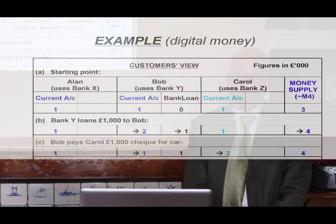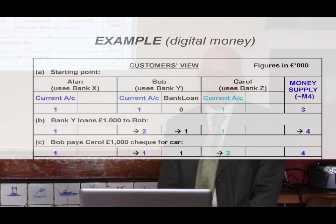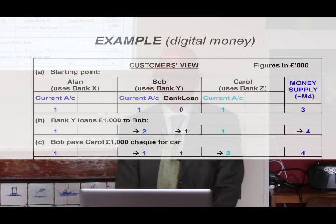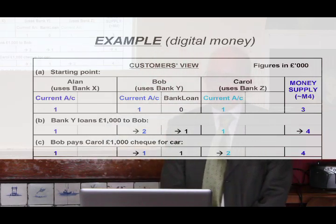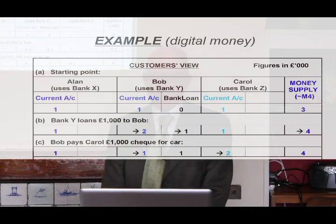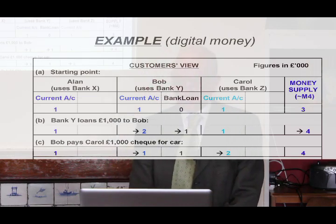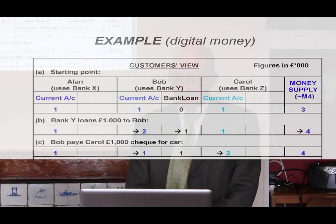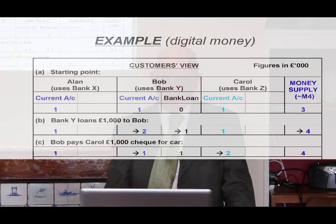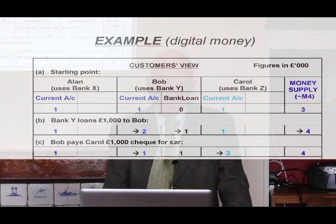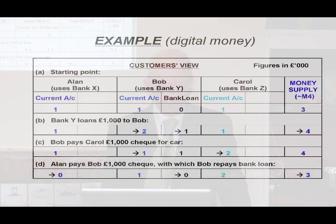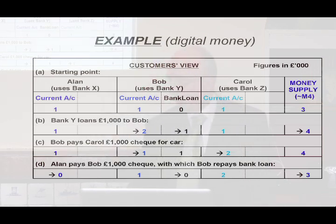Bob now buys an old car from Carol and pays her with a cheque for £1,000. So her account will go up by £1,000 and his current account will go down by £1,000. Nothing else has changed and the money supply remains the same. Then finally, Alan is going to pay Bob £1,000 for some work he's done for him, and instead of paying it into his current account, Bob's going to use that £1,000 to repay his bank loan.